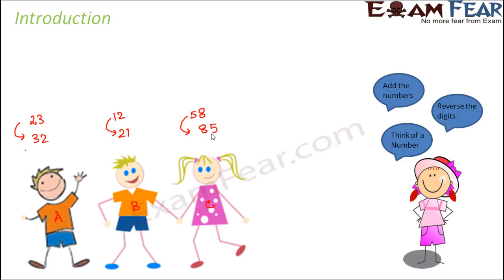Then the teacher asks them to add these two numbers. Basically, the teacher has asked them to add 23 and 32. He got the result 55. B also did the same and found the result to be 33. C also did the same and she found the result to be 143.